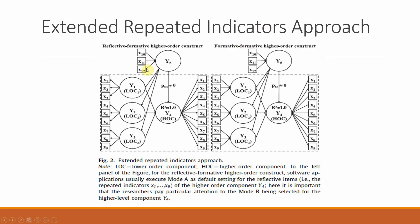In the extended repeated indicators approach, the higher order construct is specified with connections drawn from exogenous variables to the lower order constructs as well, and the same logic applies for reflective-formative or formative-formative types. The preferred approach here is the two-stage approach, specifically the disjoint two-stage approach. Future sessions will cover the embedded two-stage approach and disjoint two-stage approach in detail, as well as how to validate higher order constructs alongside their lower order constructs.